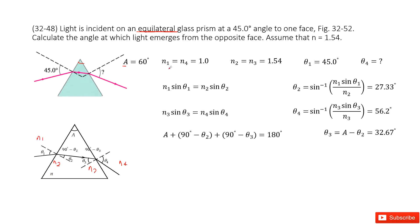Now we know n1 equals n4 because it's air, so 1.0. n2 equals n3, so 1.54 is given. And θ1 is given, we need to find θ4.